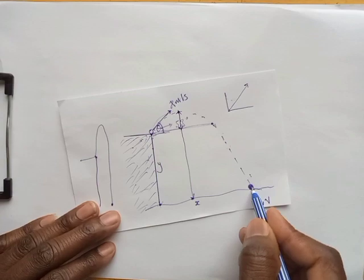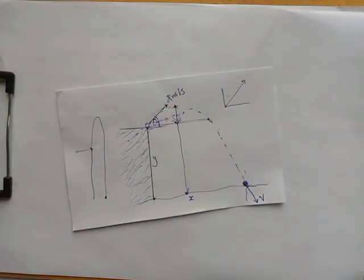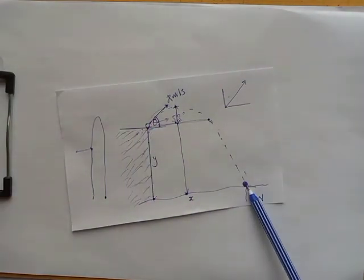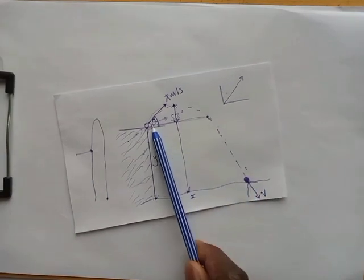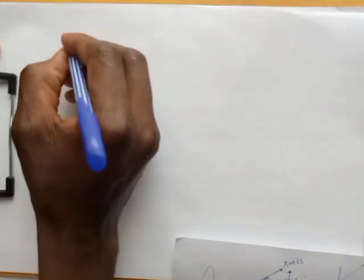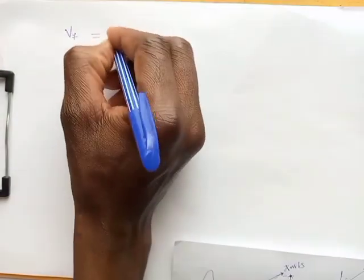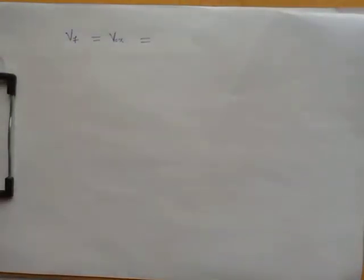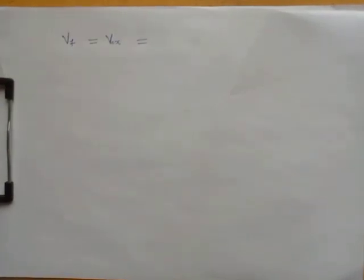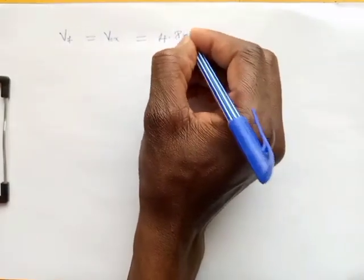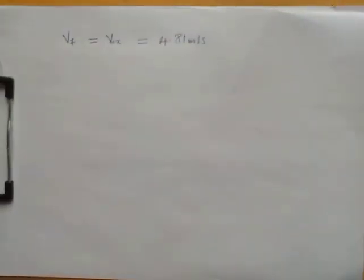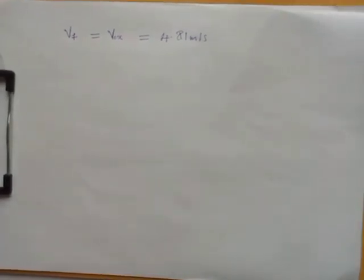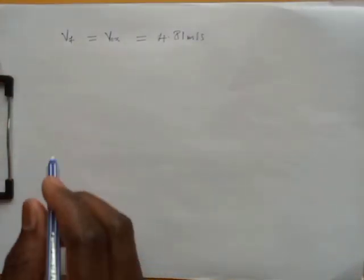For question (d), how fast is the rock traveling before it hits the water: the velocity in x remains constant, so v_final_x = v_initial_x = 4.81 m/s. For the y-component, we use v_final_y = v_initial_y + a × t, which becomes v_final_y = v_initial × sin(53°) − g × t.